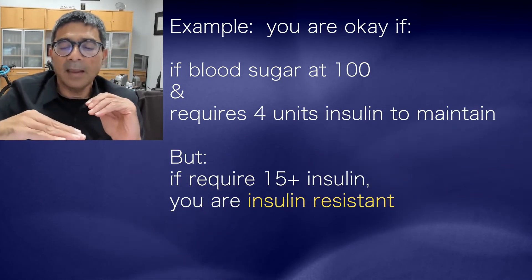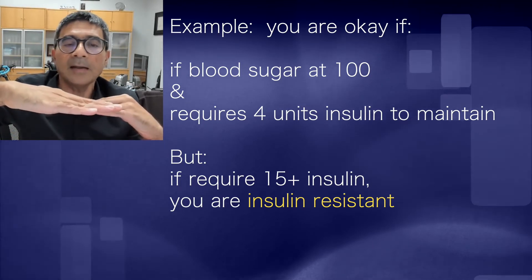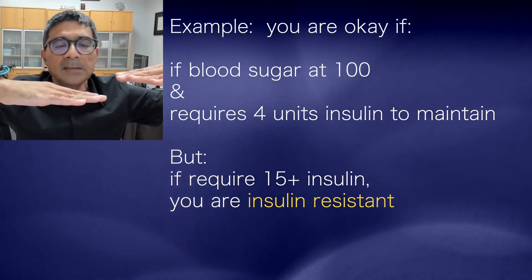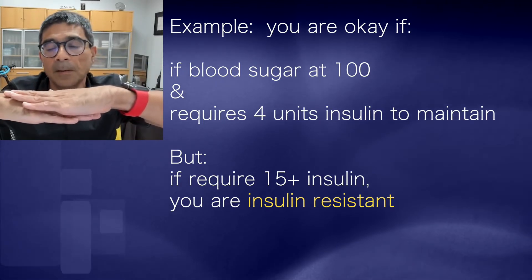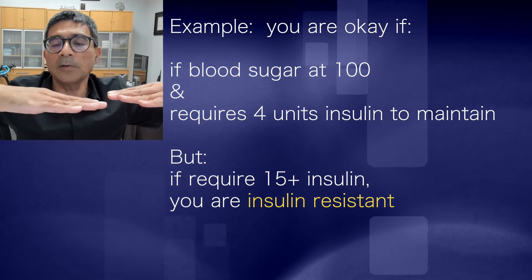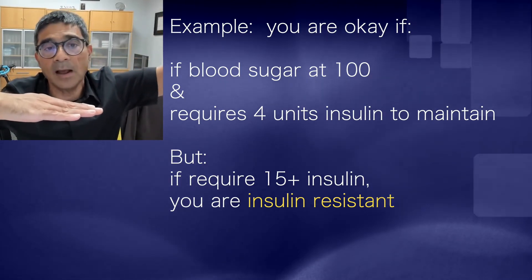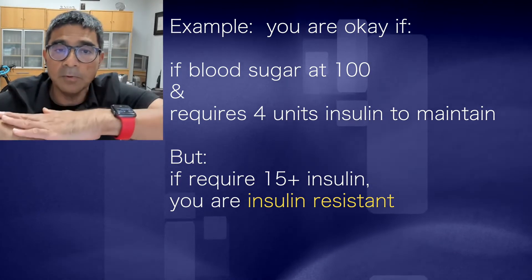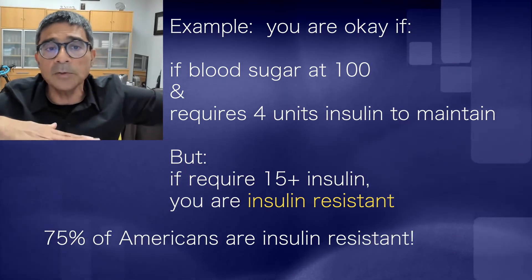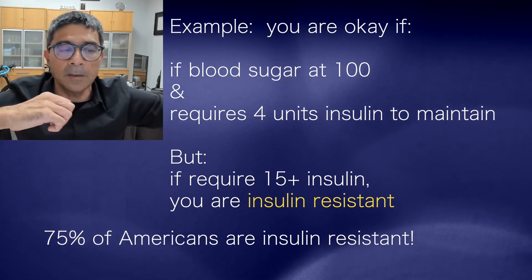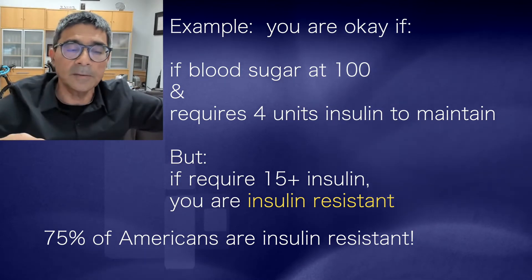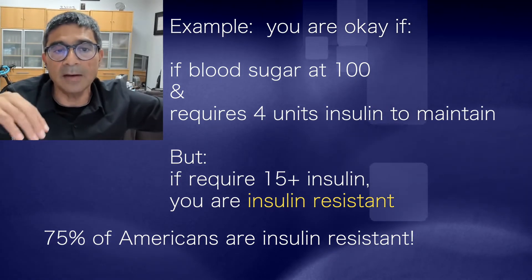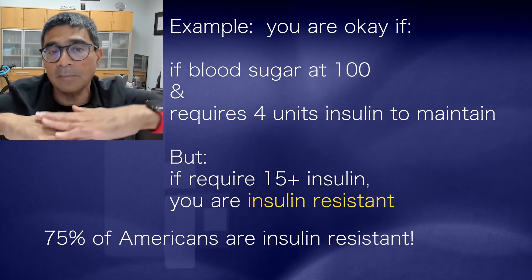In simple terms, if you have a normal sugar of about 90 to 100 and you need about four or five units of insulin, that means you need a low amount of insulin to hold your sugar there. On the other hand, if you need 10, 15, 20 or higher insulin to hold a normal sugar of 90, you are insulin resistant. That's what most Americans are — 75% of Americans need more insulin to keep their sugars in control.